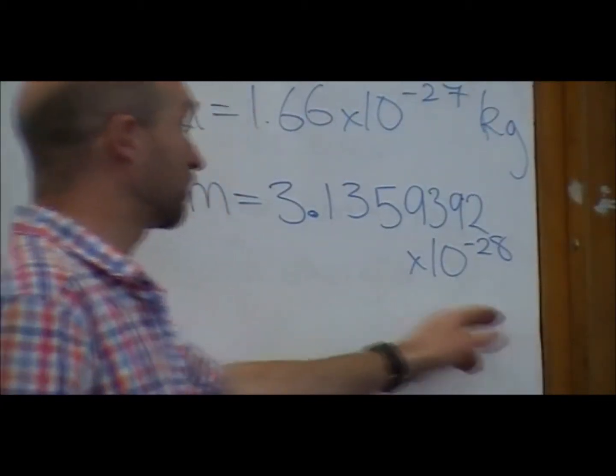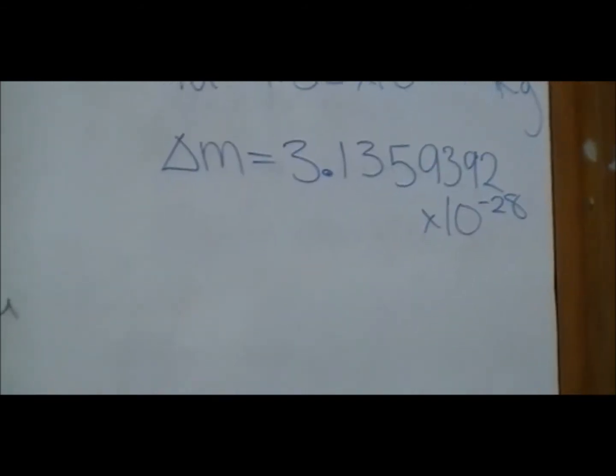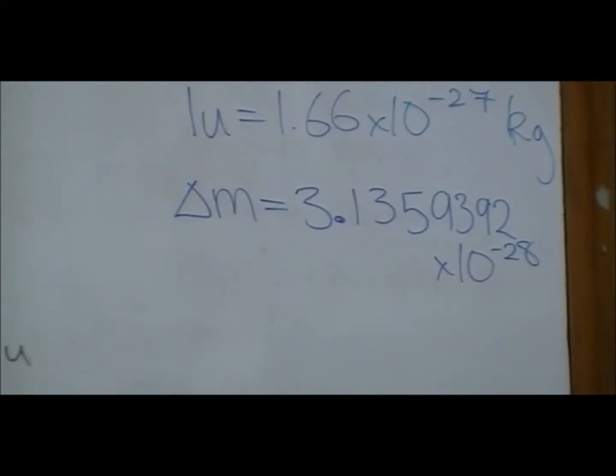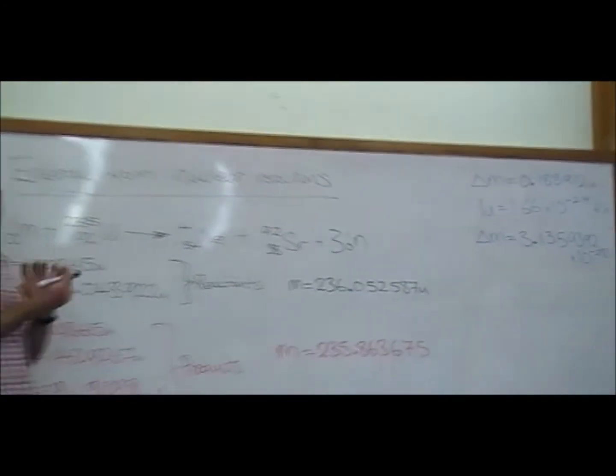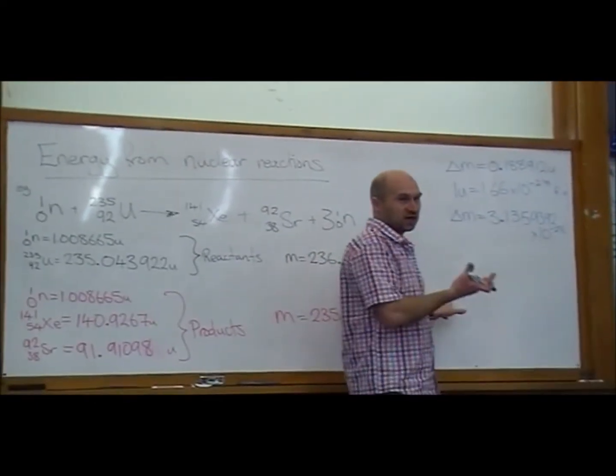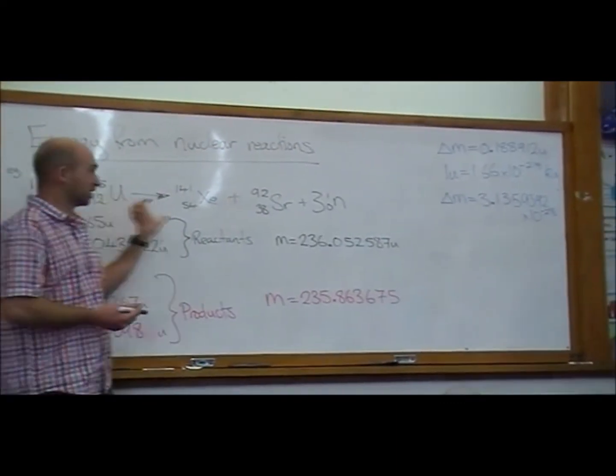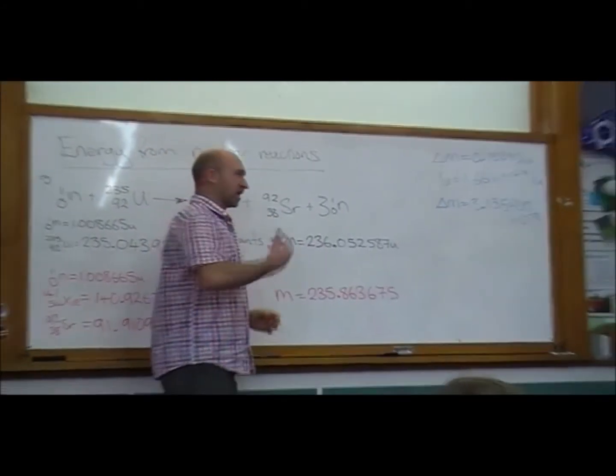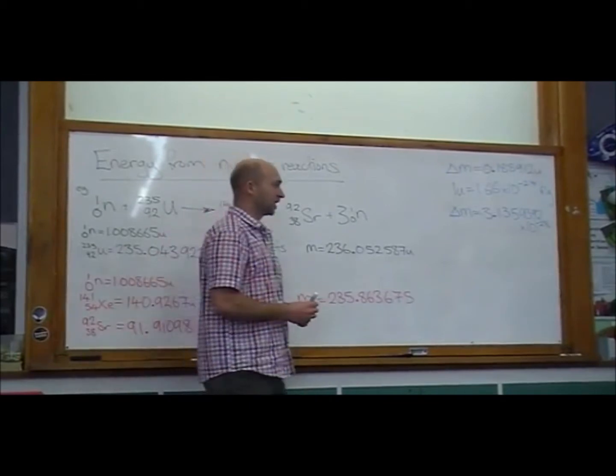This is where we can use Einstein's equation to work out the energy equivalent of that amount of mass, because we know in these nuclear reactions that mass is not conserved, and energy is not conserved, but mass energy is. So if we think about mass and energy as being interchangeable, that total amount is conserved. So if the mass has gone down, that means that energy must have been released. And that happens because we're moving from less stable to more stable nuclei, and it's that change, that increase in stability that causes the mass to decrease and causes energy to be released.